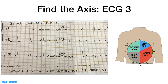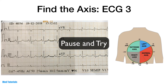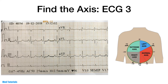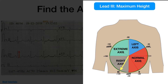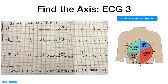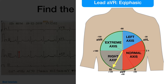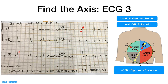We are going to try it out one more time — pause the video and try to determine the axis. Step 1: Which lead has the tallest R wave? Lead 3 has the tallest R wave, so the direction looks like it's around plus 120 degrees. Step 2: Which lead has an equiphasic QRS complex? Lead AVR is equiphasic, so the axis has to be perpendicular to AVR. From step 1 we have a general idea that the direction is plus 120 degrees, so it's unlikely to be in the opposite direction. From these two steps, it is clear that the axis is plus 120 degrees, which is in the range of right axis deviation.